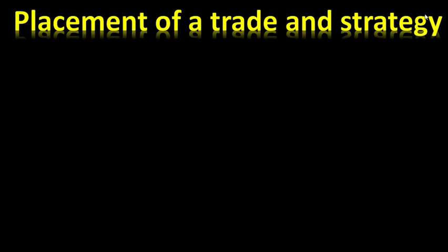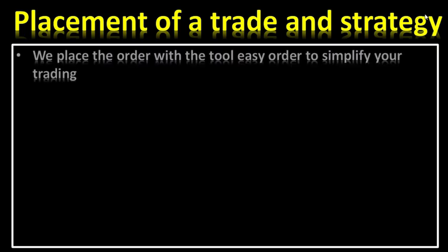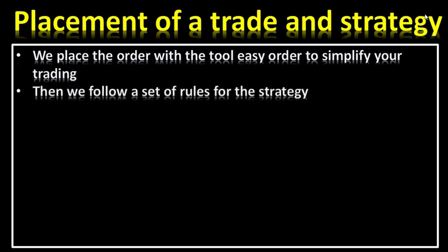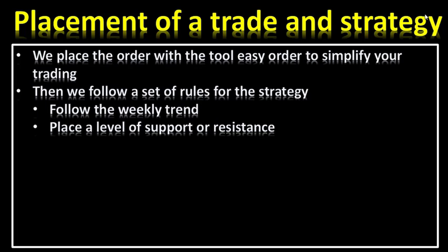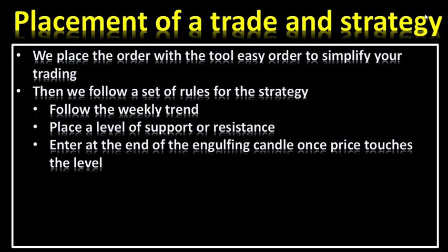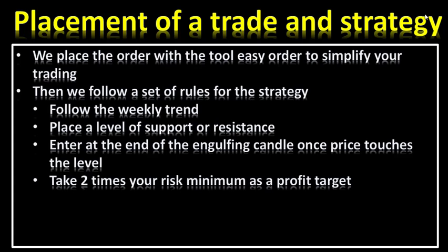Now the bonus — placement of a trade and a simple strategy. We place the order with the tool Easy Order to simplify trading. There is a video on my YouTube channel showing how it works. Very important: it automatically computes the size of your trade so you can stick to one percent of your account every single trade. The rules of the strategy: follow the weekly trend, place a level of support and resistance, enter at the end of the engulfing candle once price touches the level — price touches the level first, then creates an engulfing candle and that's when you enter. Take two times your risk as a target profit.